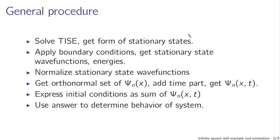The general procedure we've followed is: once we've solved the time-independent Schrödinger equation, we get the form of the stationary states. Knowing the boundary conditions, we get the actual stationary state wave functions and their energies. These can then be normalized to get true stationary state wave functions. These form an orthonormal set, psi sub n of x. We add the time part from the time-dependent Schrödinger equation, then express our initial conditions as a sum of these stationary state wave functions to determine the behavior of the system.